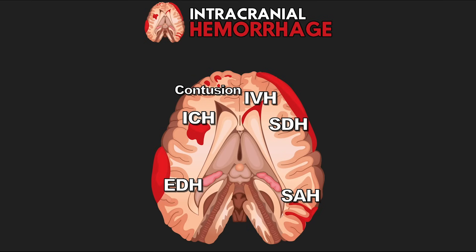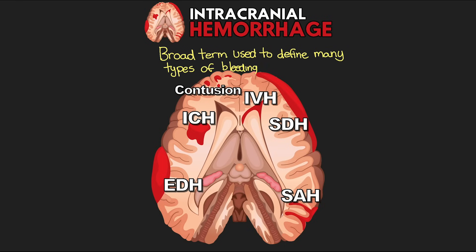Let's get into our lesson talking about intracranial hemorrhage. This is a broad term that's used to define many types of bleeding within our skull and or our brain. When we talk about these, we have two big groups or types of these bleeds that we refer to.